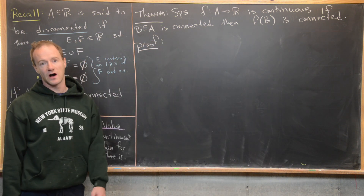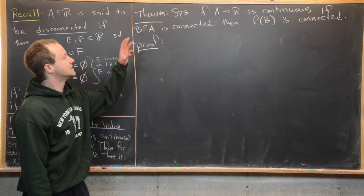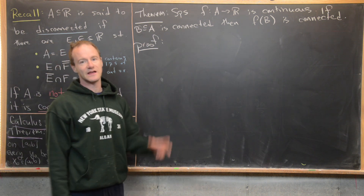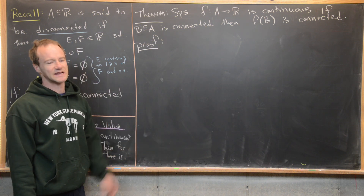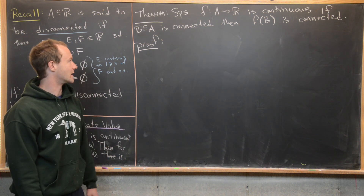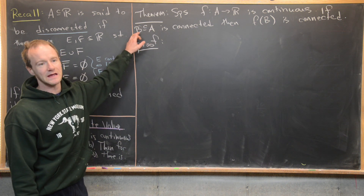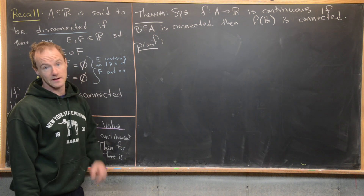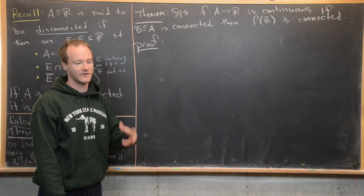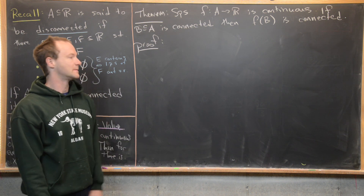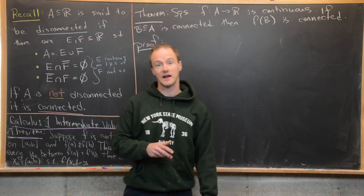Now we're going to prove the following theorem and show how that implies the IVT as a corollary at the end. The theorem says: if we have a continuous function on A — continuous at every point in A, where A is a subset of the real numbers — and B is a connected subset of A, then F(B) is also connected. In other words, the image of a connected set is connected.